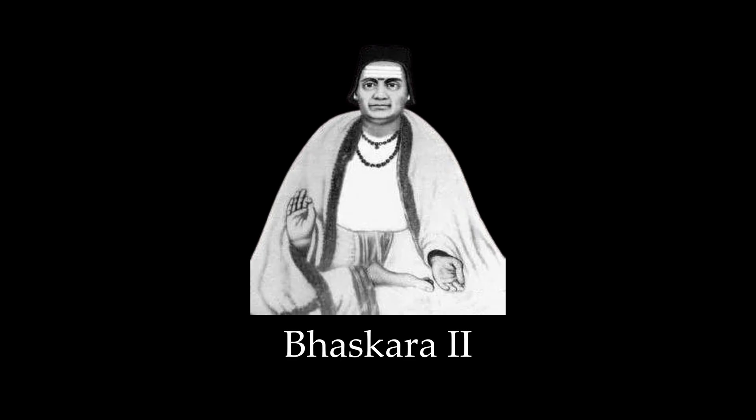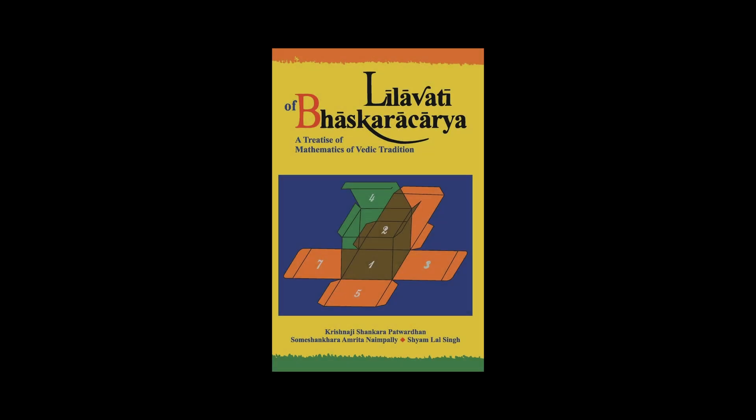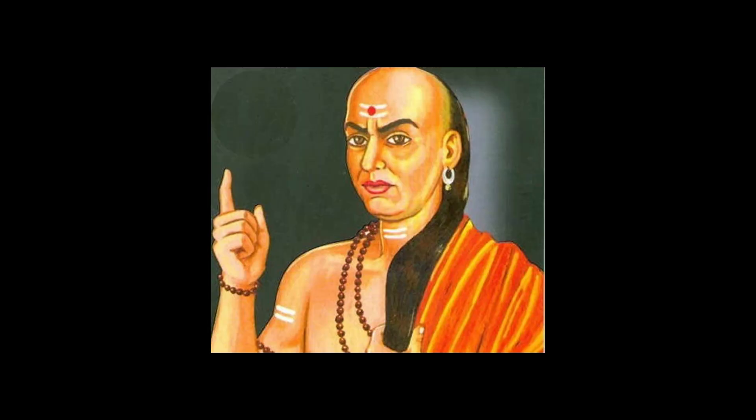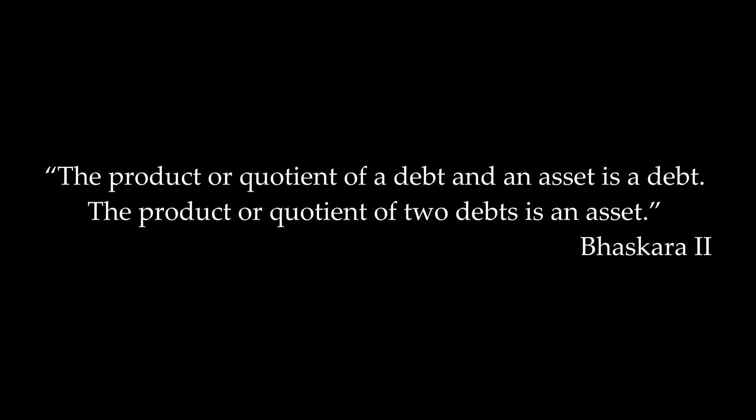Then, in 1150 AD, a third mathematician named Bhaskar II discussed the mathematics of 0. He posited in his work Lilavati that dividing by 0 creates an infinite quotient. He believed that as the divisor becomes smaller and smaller, the quotient becomes larger and larger, so dividing by 0 gives an infinitely large result. That raises another question: what about negative numbers? In his algebra treatise Bijaganit, he acknowledged negative numbers and actually had modern ideas about them despite the time he was living in. The product or quotient of a debt and an asset is a debt. The product or quotient of two debts is an asset. Debts were negative numbers and assets were positive numbers.